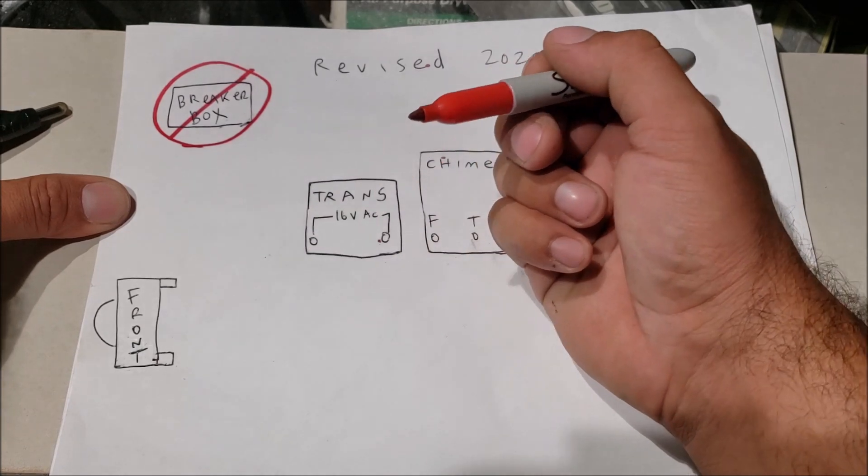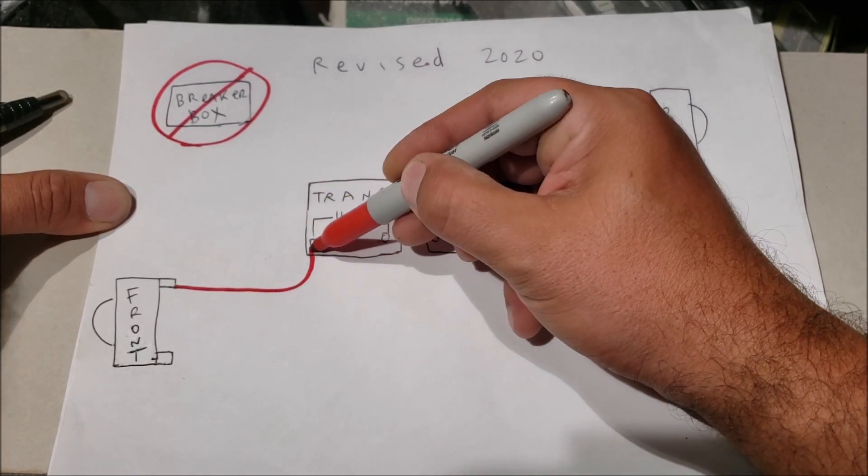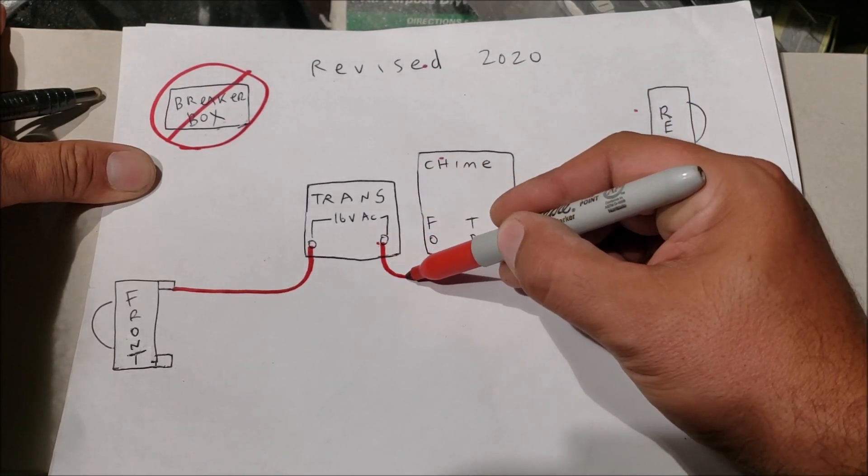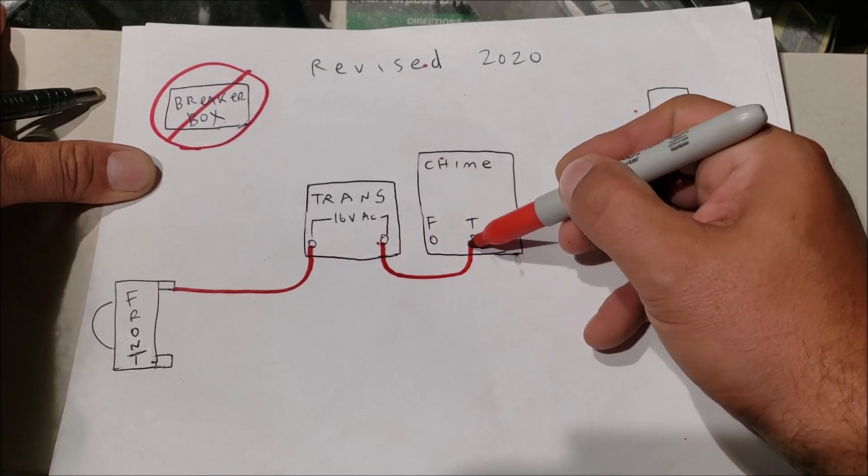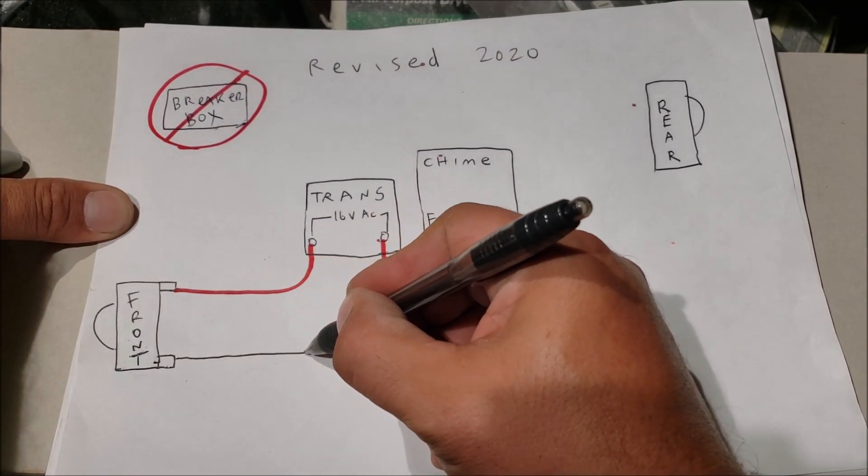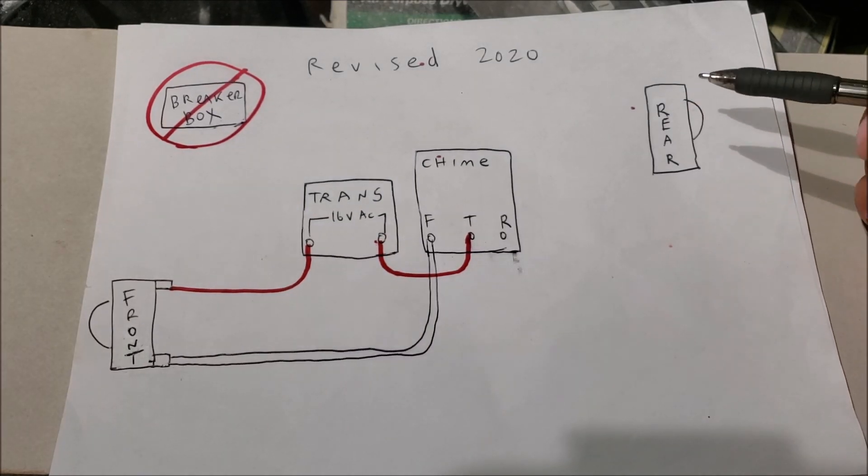It's AC, it doesn't matter which color you choose, but we're going to run one red over here to the transformer, then take the other side of the transformer and run it over to T on the doorbell. Now we have the white wire and we're going to run it straight over to front doorbell.